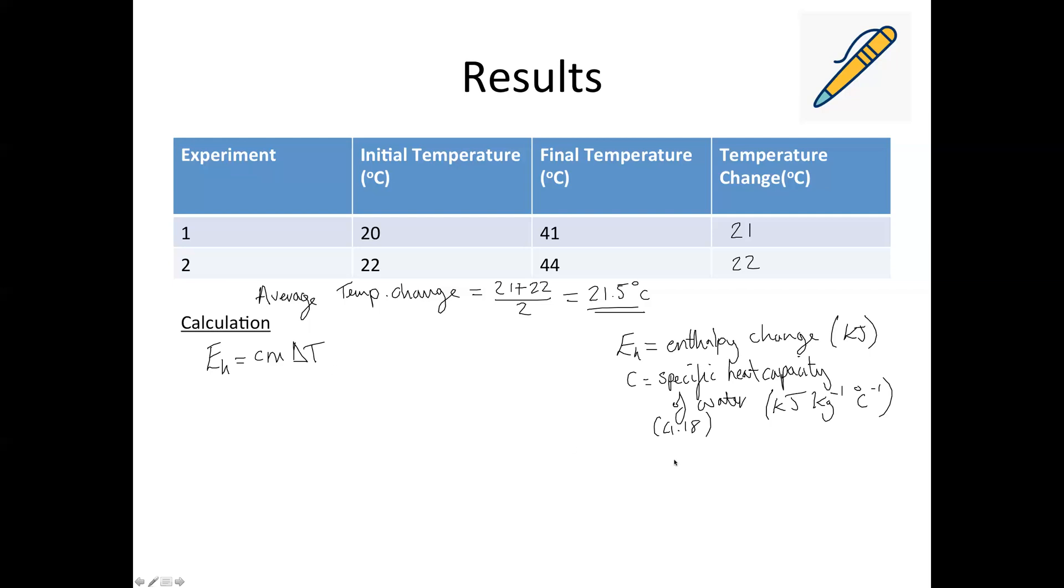And then the last two things. So M is the mass of water. Okay, and that has to be in kilograms because our specific heat capacity is per kilogram. So usually the mass of the water will be in cubic centimeters, which one cubic centimeter of water is equal to one gram. So to change the grams to kilograms, we would divide by 1000. Okay, but we'll look at that through the calculation. And then the last thing is delta T. That is the change in temperature. And that's given in degrees Celsius. Okay, so that's all the different variables in the equation.